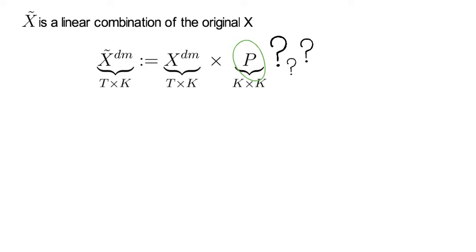So the question now comes up: which P shall we choose? And clearly we have a degree of freedom here, but we also have the constraint that a covariance matrix of X tilde shall be diagonal.